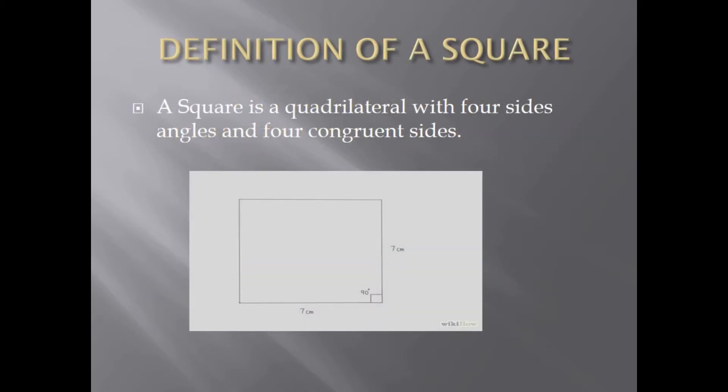Definition of a Square: A square is a quadrilateral with four angles and four congruent sides. The diagram below is an example of a square.